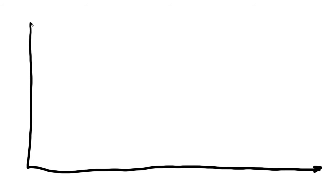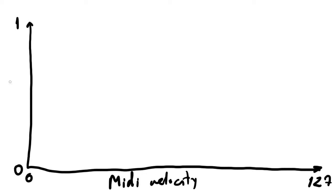Let me start out by drawing some stuff on the screen for you. What we have here is a graph with MIDI velocity and hit energy. Some of you might know that MIDI velocity always has a value of 0 to 127, and when we measure the hit energy of a drum stroke, we measure it from 0 to 1. So a hit with a hit energy of 1 is the hardest hit we have in our sample library.